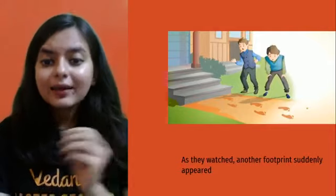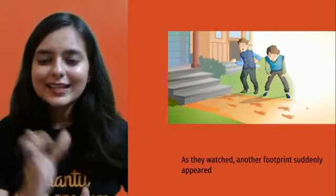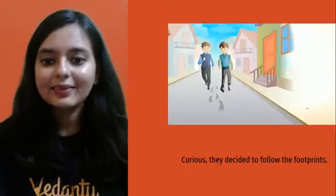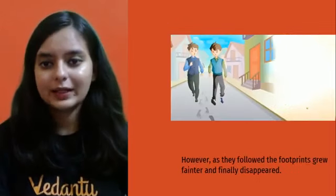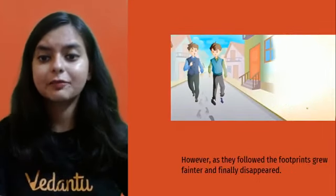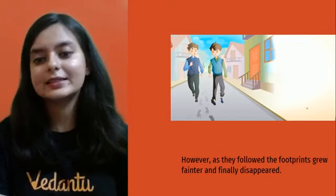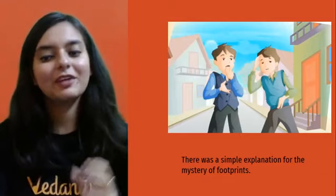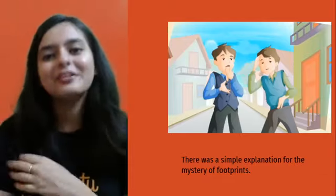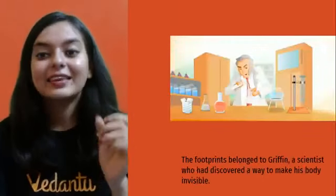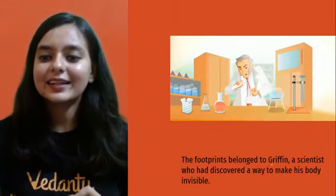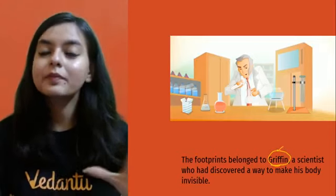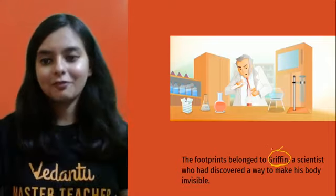When the boys watched, another footprint suddenly appeared — just footprints and nobody. Obviously they were shocked, and then curiously they followed the footprints. However, as they followed, the footprints grew fainter and fainter and finally disappeared. There was a simple explanation for this mystery: the footprints belong to the main character of the story, around whom the entire story revolves — that is Griffin.